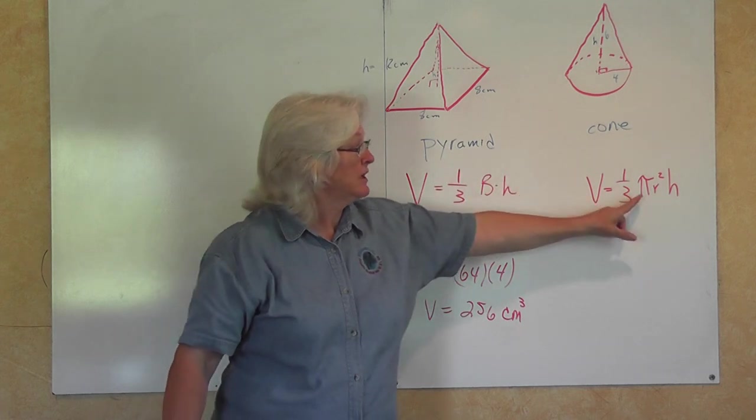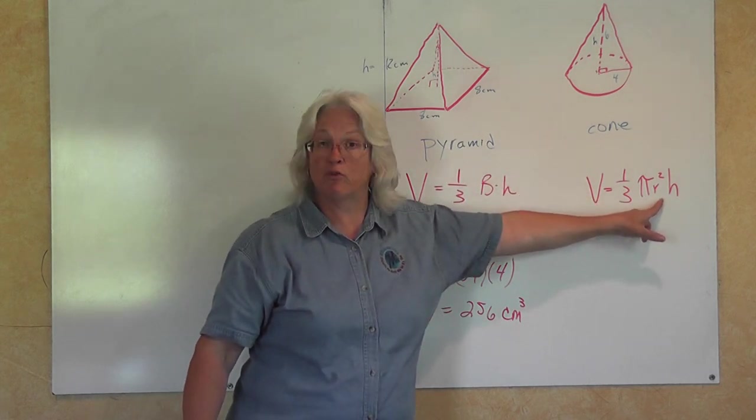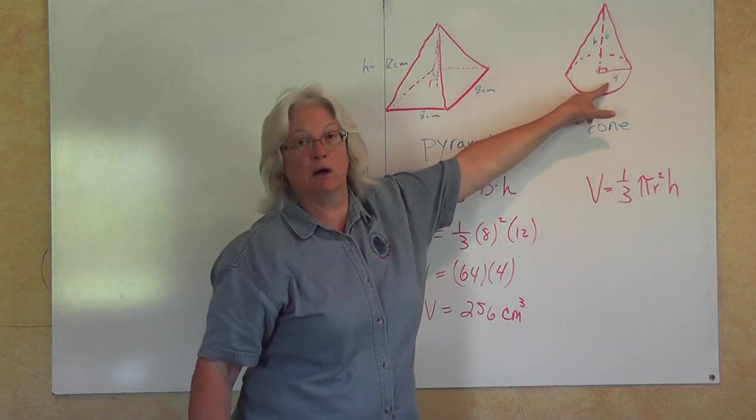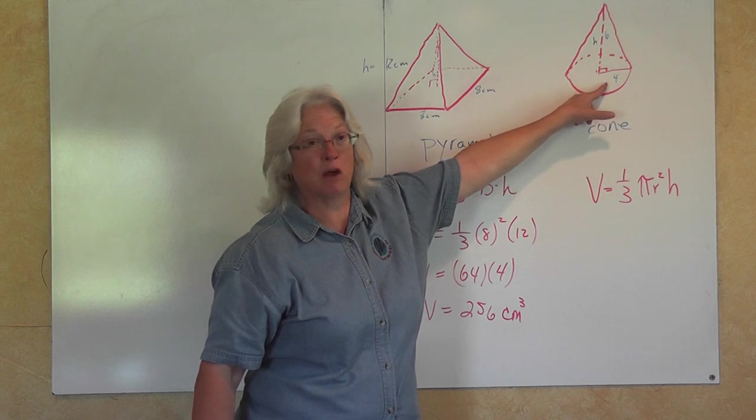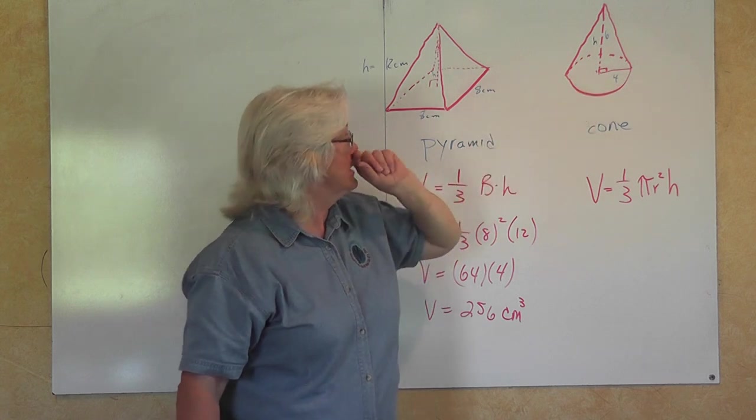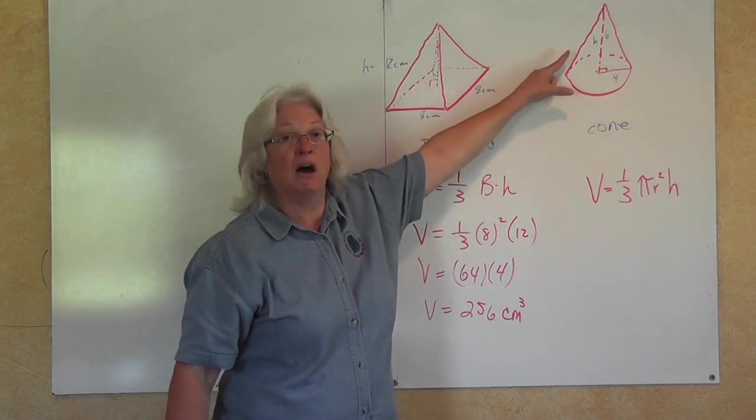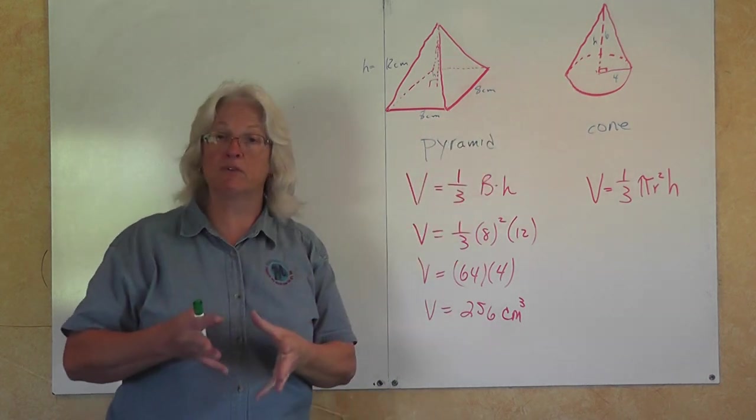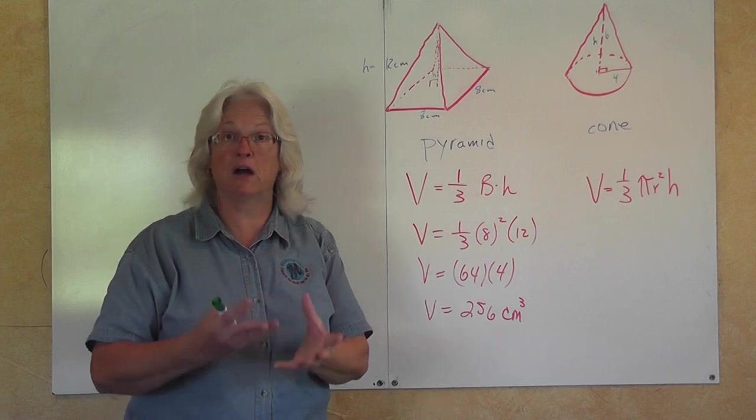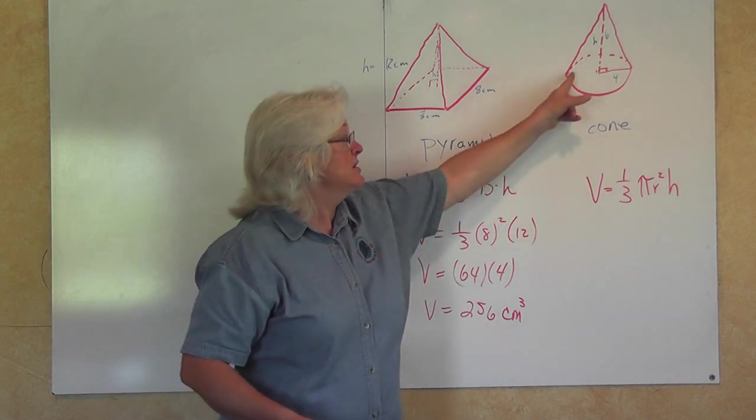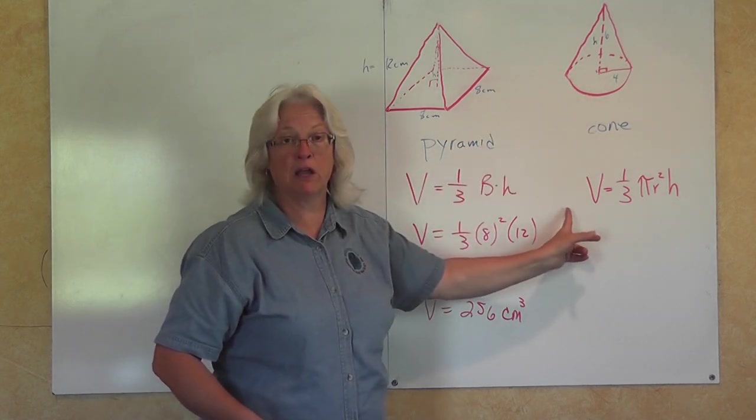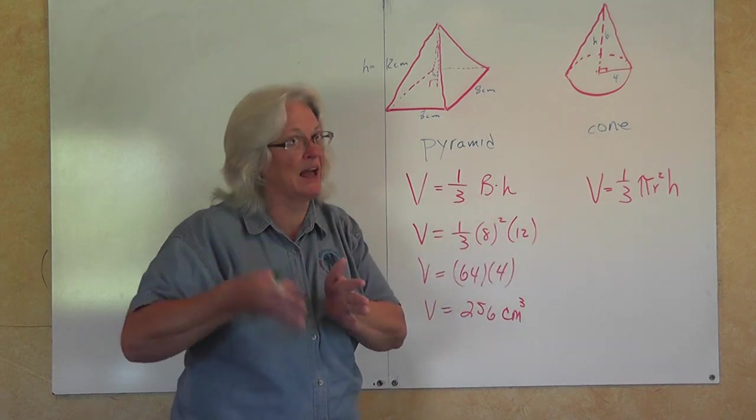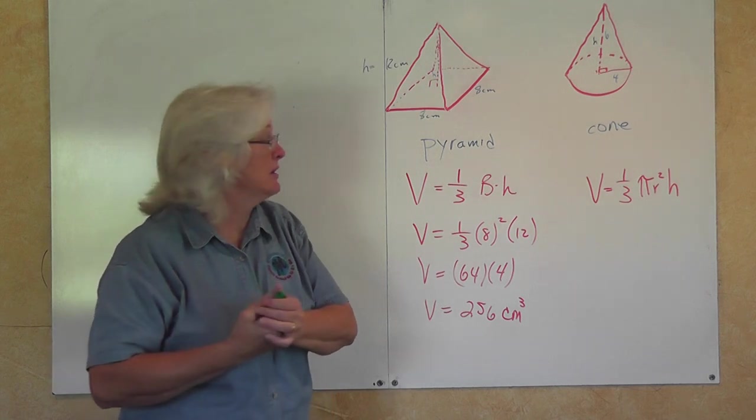What you have to be really careful for is realize that our formula is talking about the radius. And here we have a dimension given to us, it's the radius, it's four centimeters. The height is six centimeters. If they had given us the diameter of that circle and asked you to find the volume of this cone, one-third pi r squared h, you would have to remember that diameter—you have to take half of the diameter in order to come up with your radius.